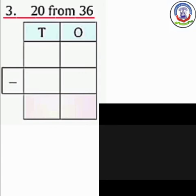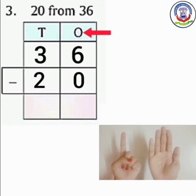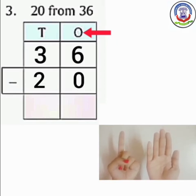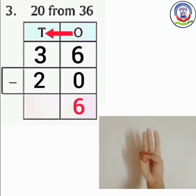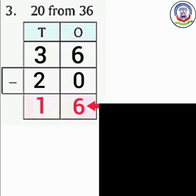Number 3: 20 from 36. तो पहले हम 36 लिखेंगे, फिर 20. पहले हम ones column में subtract करेंगे. Numbers are 6 and 0. Open 6 fingers. Number is 0. कोई भी number में से 0 माइनस करने से हमें answer same मिलता है. So we will write here 6. अब हम 10s column में subtract करेंगे. Numbers are 3 and 2. Open 3 fingers and close 2 fingers. How many fingers are left? 1. So we will write here 1. The difference is 16.